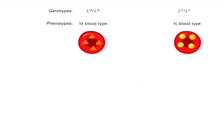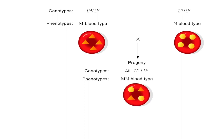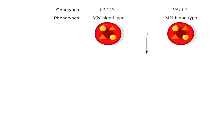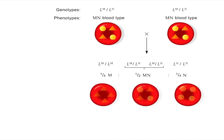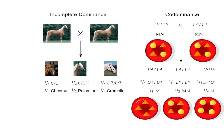A person homozygous for the LM allele and another person homozygous for the LN allele can only produce offspring who are heterozygous, LM-LN. These offspring will show both the M and N antigens on their red blood cell surface. Two heterozygotes produce offspring who have the M, MN, or N phenotype in a 1 to 2 to 1 ratio. The genetic segregation patterns of codominant and incompletely dominant traits are the same: 1 to 2 to 1 phenotypic and genotypic ratios for progeny from crosses between two heterozygotes.